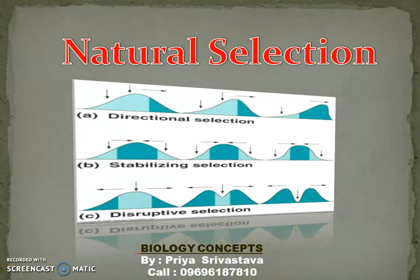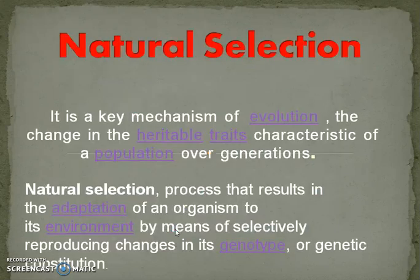Hi friends, we are discussing our module three, that is evolution. Today we are going to discuss a very interesting topic: natural selection. We will cover the basics of natural selection and the types of natural selection in this video. In the thumbnail you can easily see through these figures there are three types of natural selection: directional, stabilizing, and disruptive. So let us discuss the introduction first.